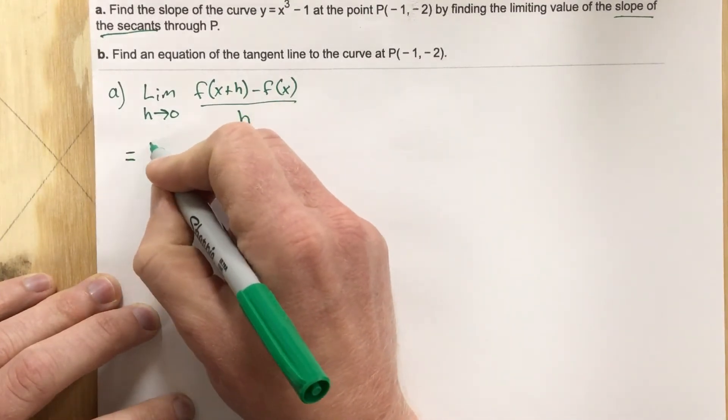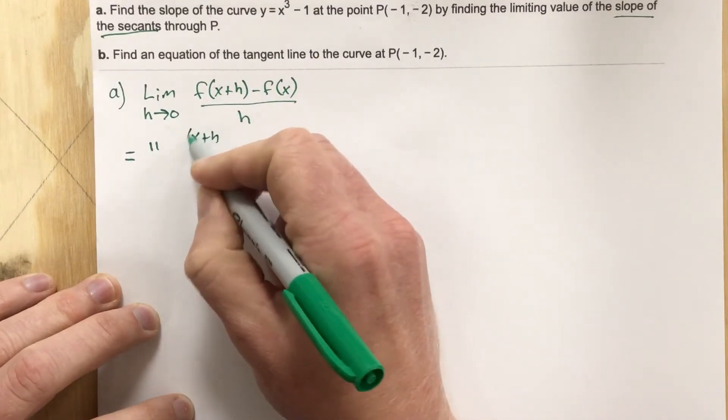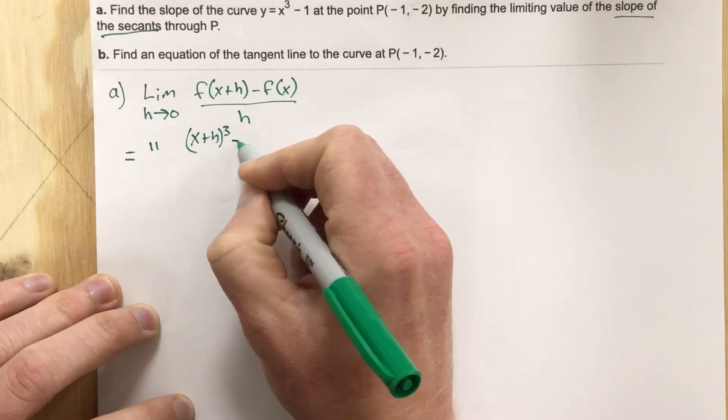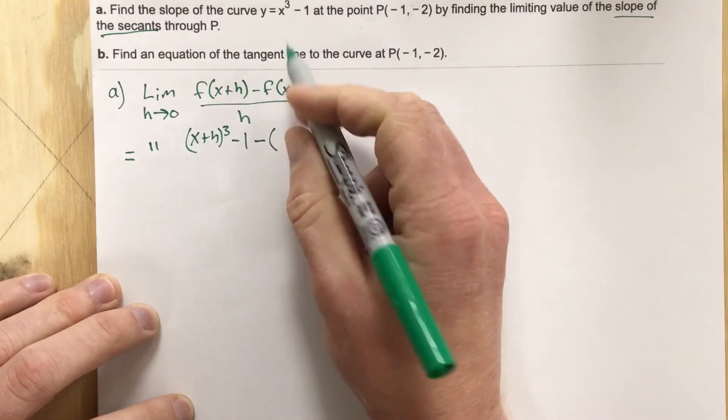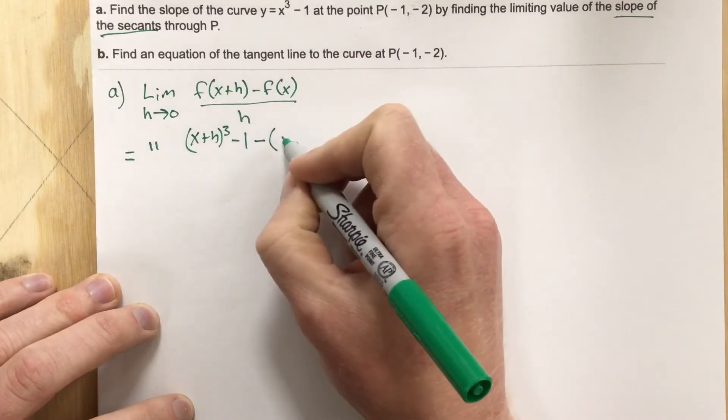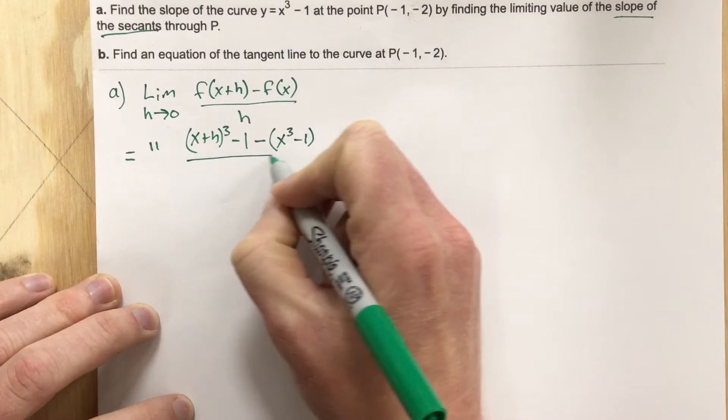So this is going to equal, we're going to plug in x plus h into the function, so we have x plus h cubed minus 1. It says minus the function, so minus f of x is just x cubed minus 1, and that's all over h.